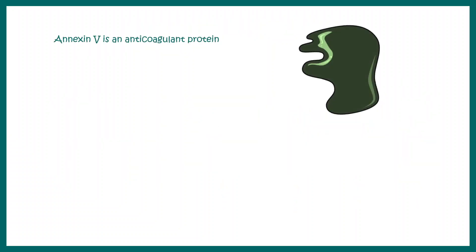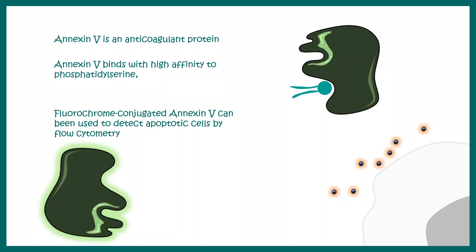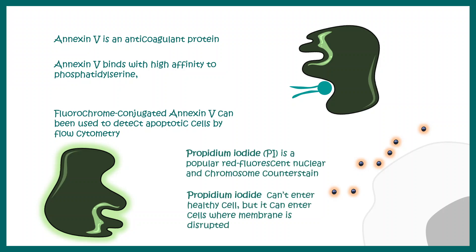So in this assay, we need Annexin-5, which is actually an anticoagulant protein. Annexin-5 has a very high binding affinity with phosphatidylserine. In order to detect this binding process, we can conjugate Annexin-5 with a dye — let's say FITC — and later detect it with flow cytometry. The PI, or propidium iodide, is a dye that can penetrate the membrane if the membrane integrity is compromised, so propidium iodide is found inside the cell if there is membrane damage.